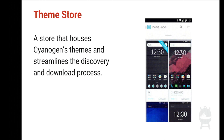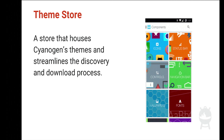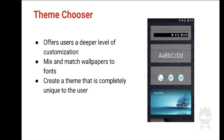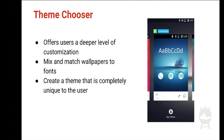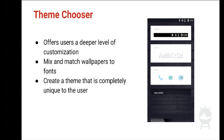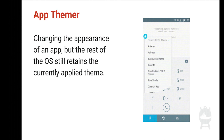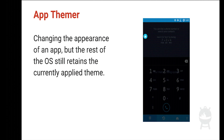All of the content in the store is created by the community. The theme store offers users a deeper level of customization — users can select a theme, separate it into components, then swap the components with another theme, essentially mix and match. This allows users to create endless combinations of themes that are completely unique to the individual. Then we have app themer, which takes it even further.